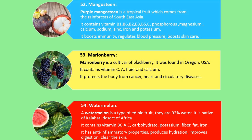Number 54. Watermelon. A watermelon is a type of edible fruit; they are 92% water. It is native to the Kalahari Desert of Africa. It contains vitamin B6, A, C, carbohydrate, potassium, fiber, fat and iron. It has anti-inflammatory properties, produces hydration, improves digestion, and clears the skin.